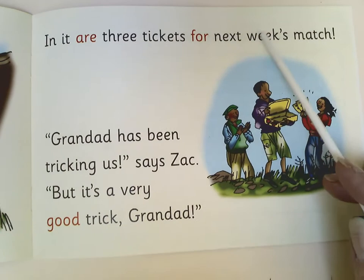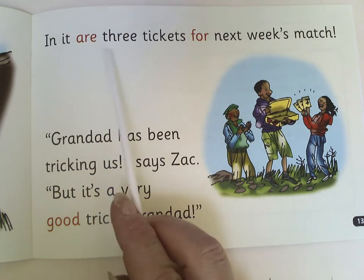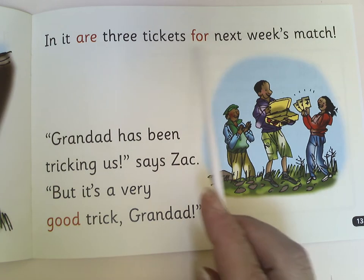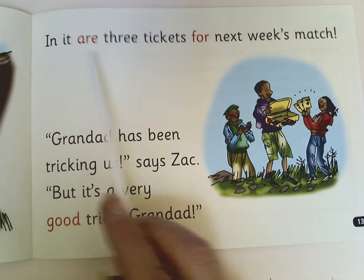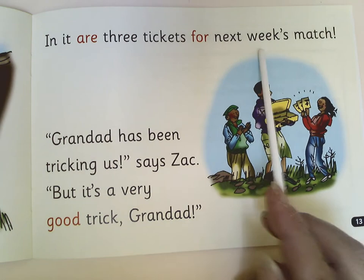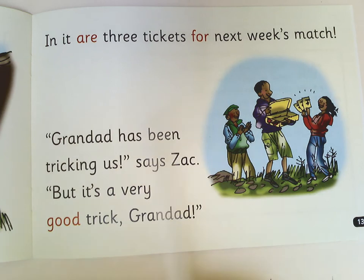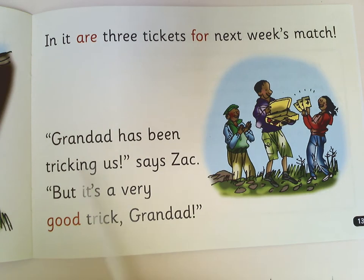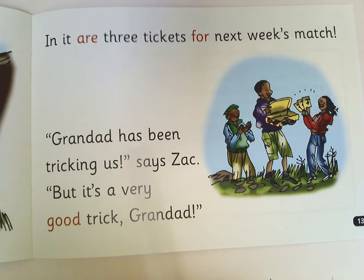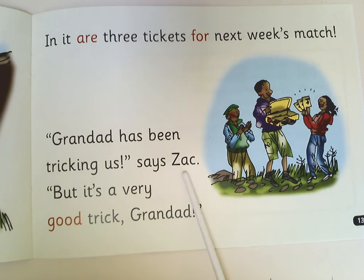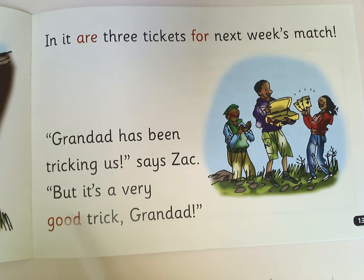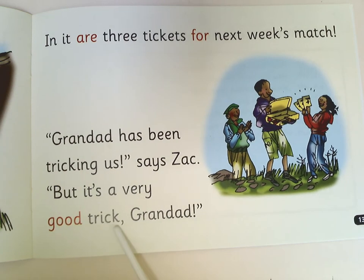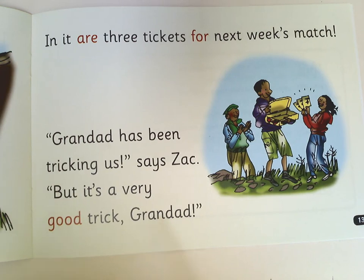Nearly there. Yasmin sees a tin in a crack in the rock. Your go. Brilliant. Last page — doing really well today. In it are three tickets for next week's match. Your go. Well done. My turn. Grandad has been tricking us, says Zach. Your go. But it's a very good trick, Grandad. Your go. Well done.